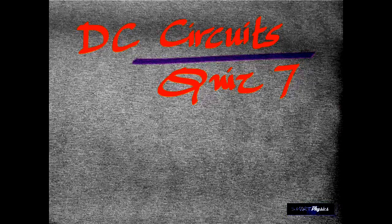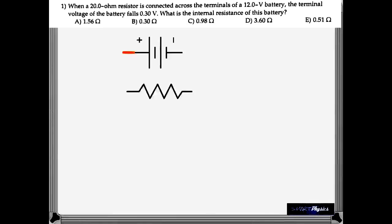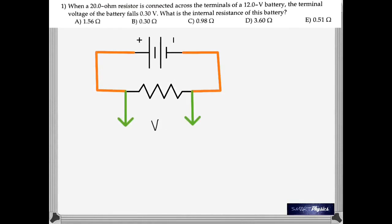Quest 7 on DC circuits. Question 1. We have a 20 ohm resistor connected across the terminals of a 12 volt battery. The terminal voltage falls to 0.30 volt. What is the internal resistance?